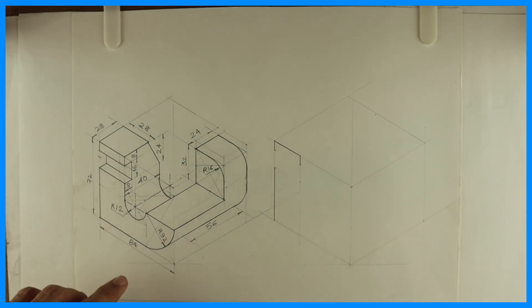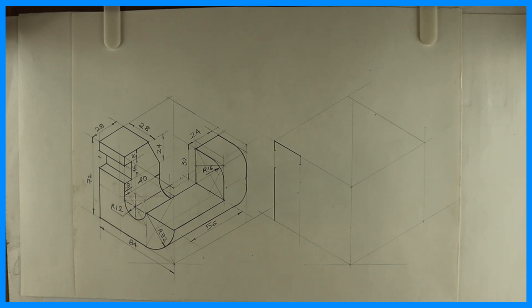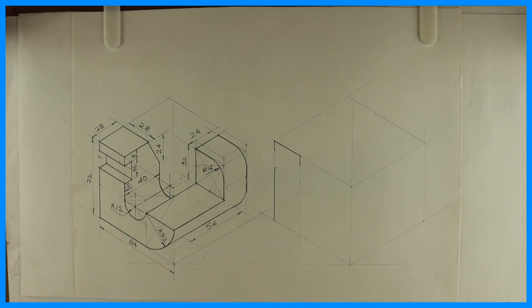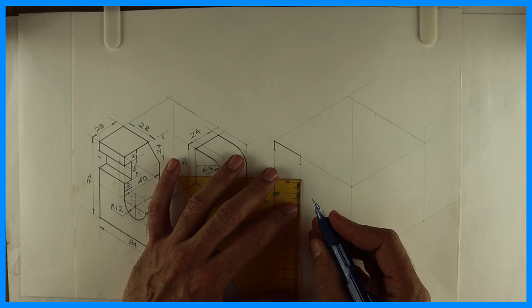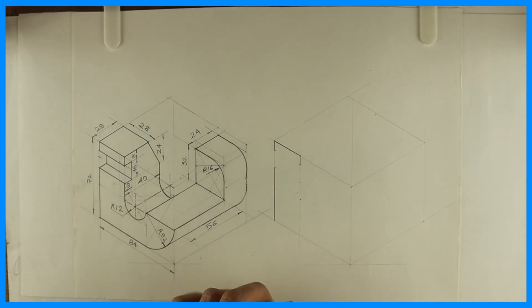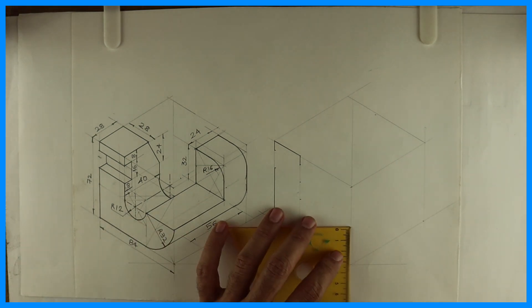Then this height is how much? That is, this is 32, right? See, total is 72. 72 minus 32 is 24. So it will be 16. From here you will take 32.